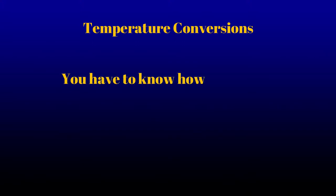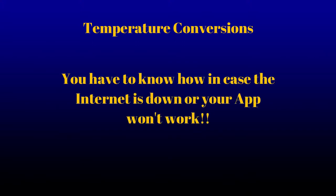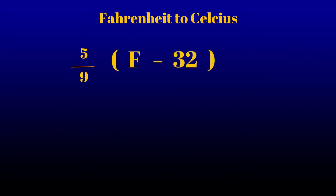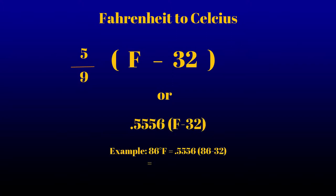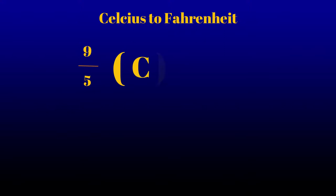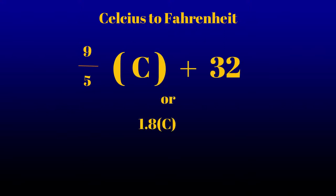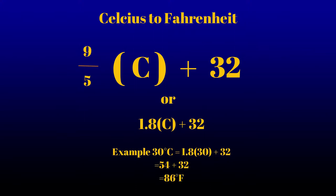Converting from one scale to another is quite easy. For Fahrenheit to Celsius, you take 5/9 and multiply that by Fahrenheit minus 32, or another way, 0.55556 times Fahrenheit minus 32. For Celsius to Fahrenheit, you take 9/5 times Celsius and then add 32, or in other words, 1.8 times the Celsius plus 32.